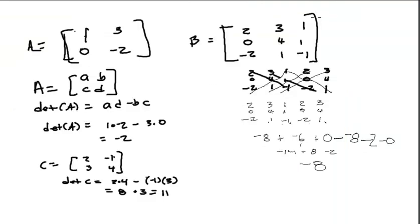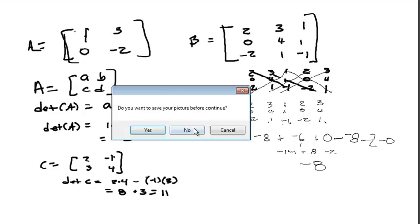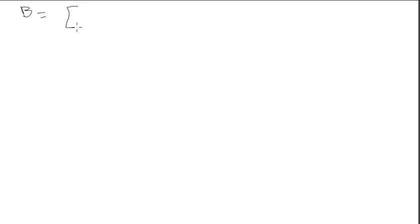So that's determinants. Now let's find an inverse. We're going to find the inverse of matrix B, which is [1, 0, 3, -2].